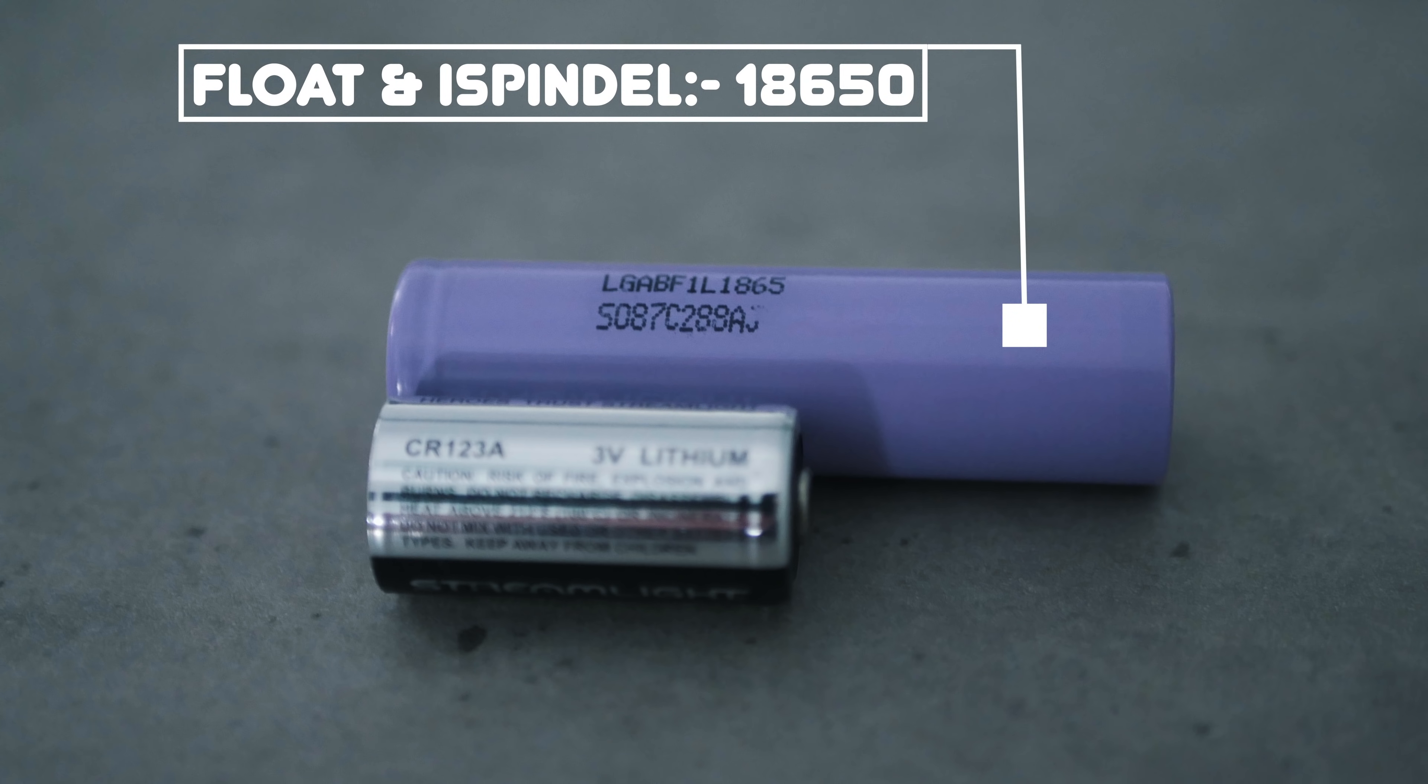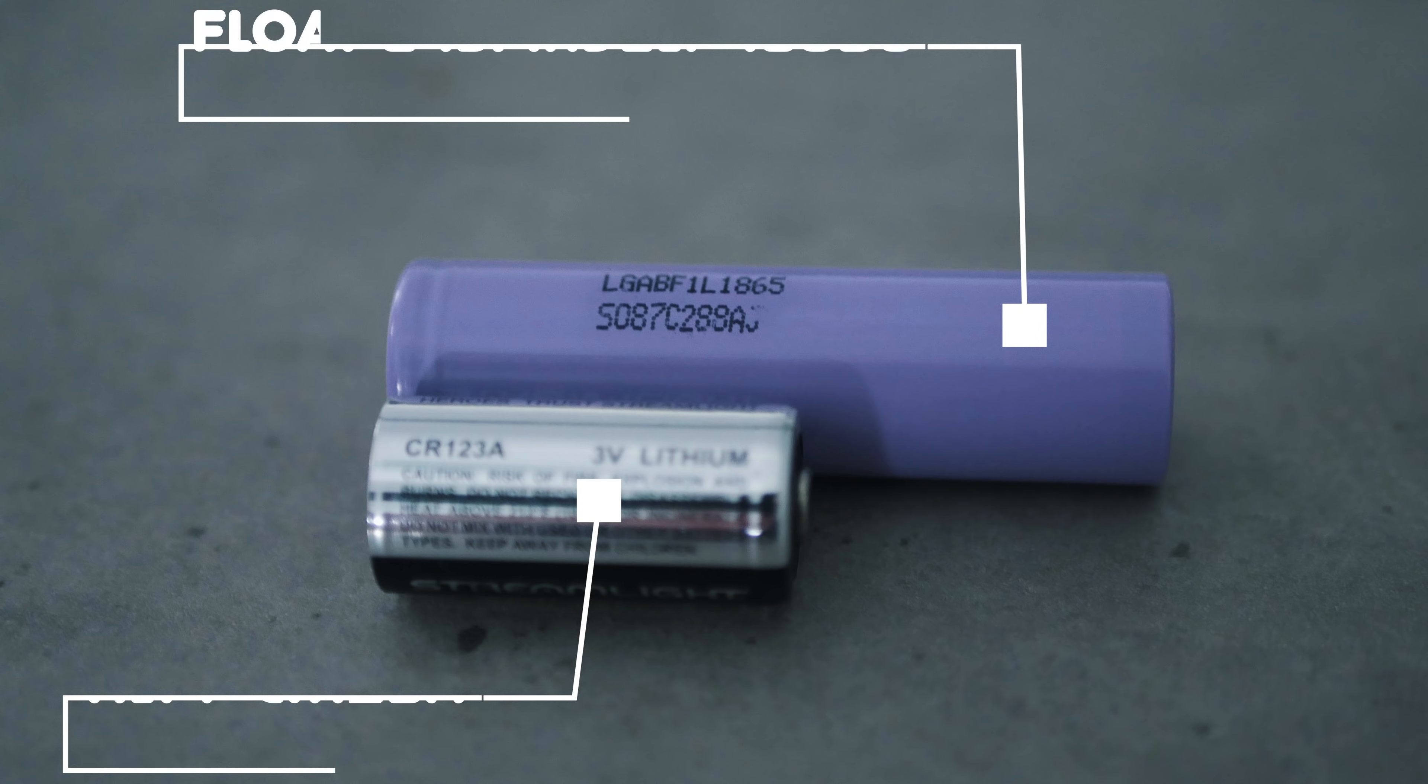Both the iSpindle and the float use rechargeable batteries, 18650s to be precise, which you may or may not have already, along with a suitable charger. Whereas the tilt uses the CR123A batteries, but thankfully you do not need to open any of these devices very often.